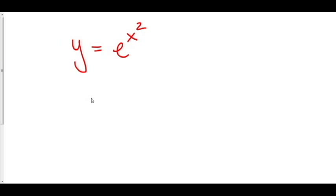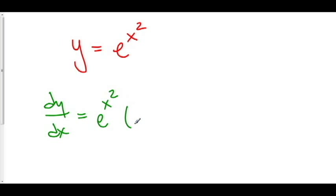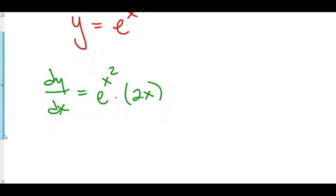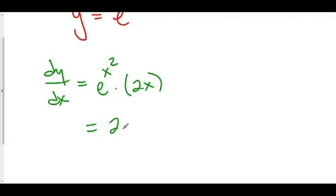Let's look at one more. y equals e to the x squared. Let's first take the derivative using the chain rule. The derivative of e to the stuff is e to the stuff times the derivative of the stuff. The derivative of x squared is 2x. So our derivative dy/dx equals 2x times e to the x squared.